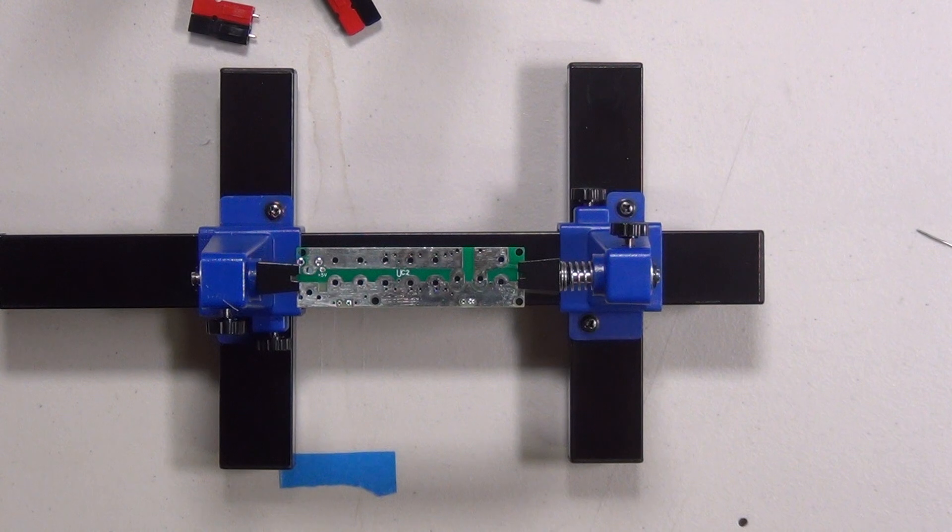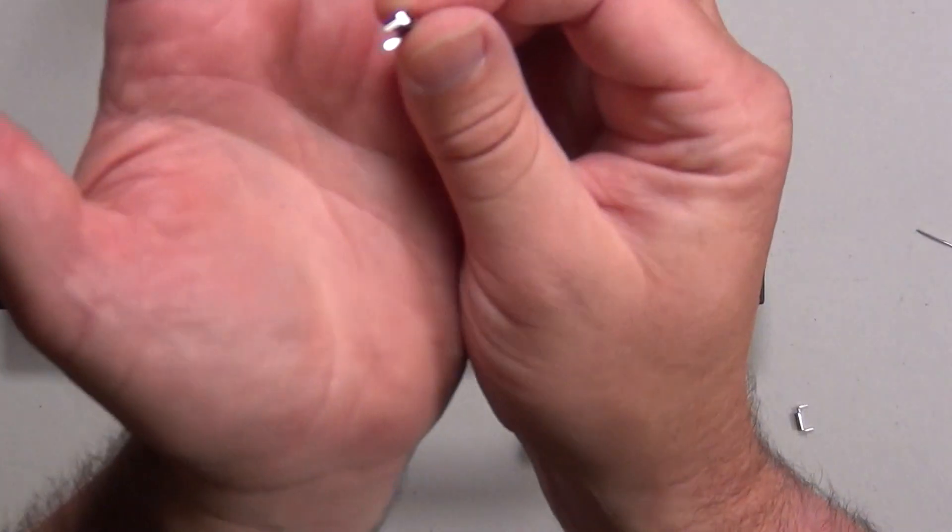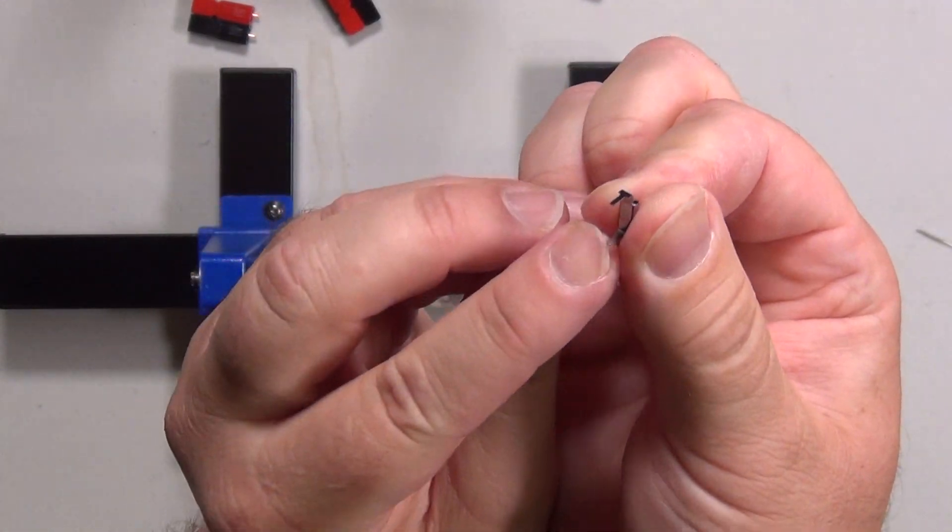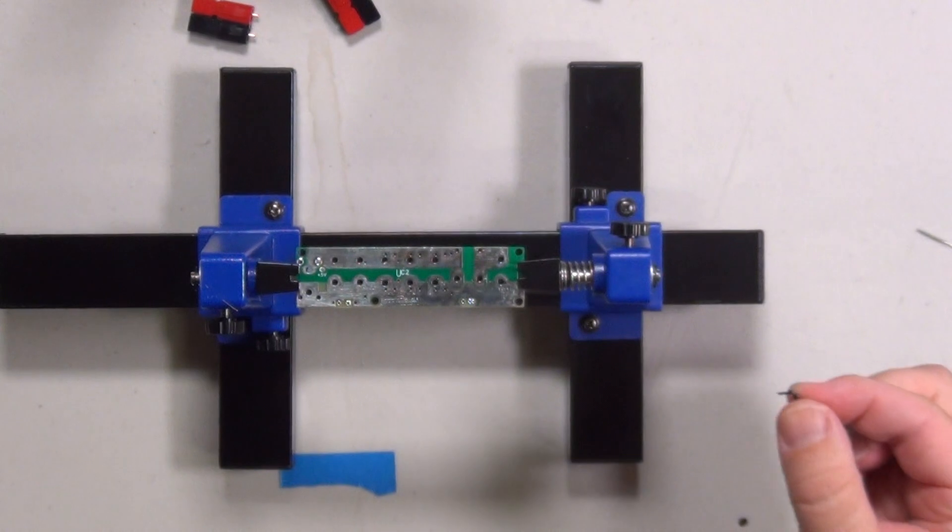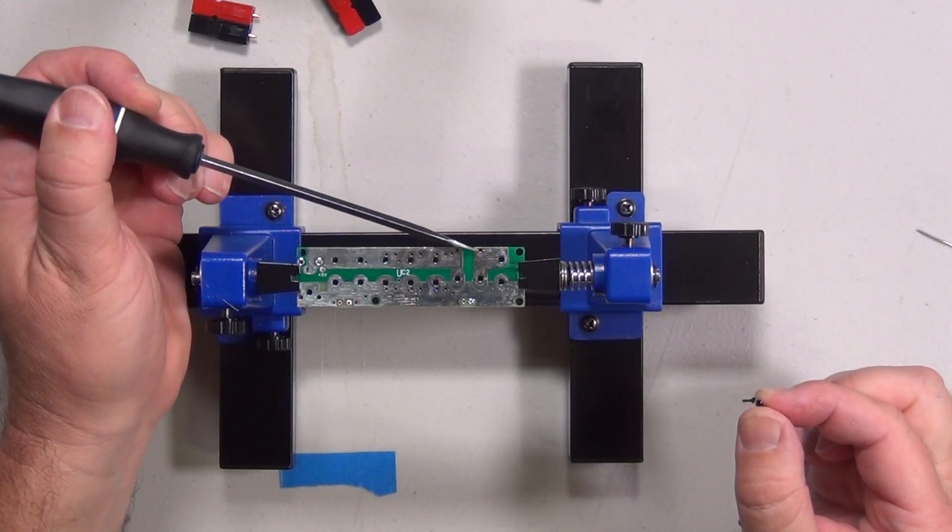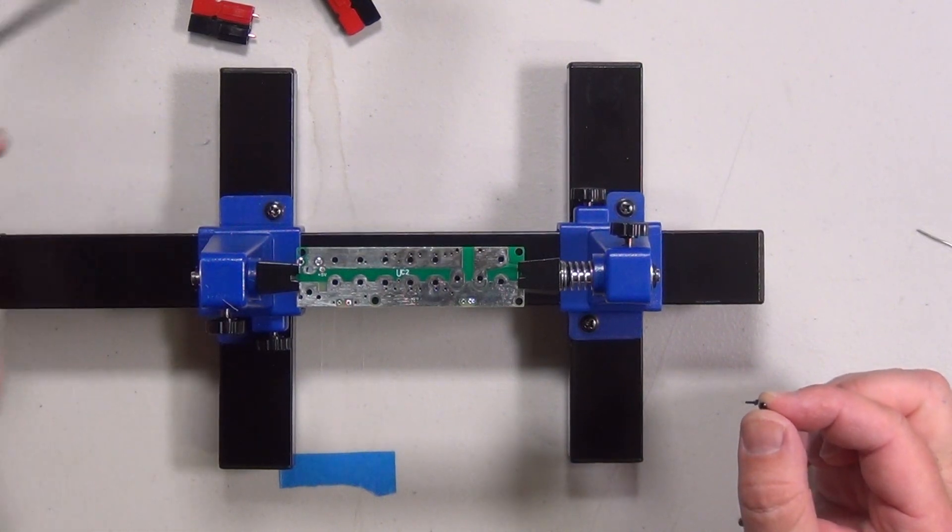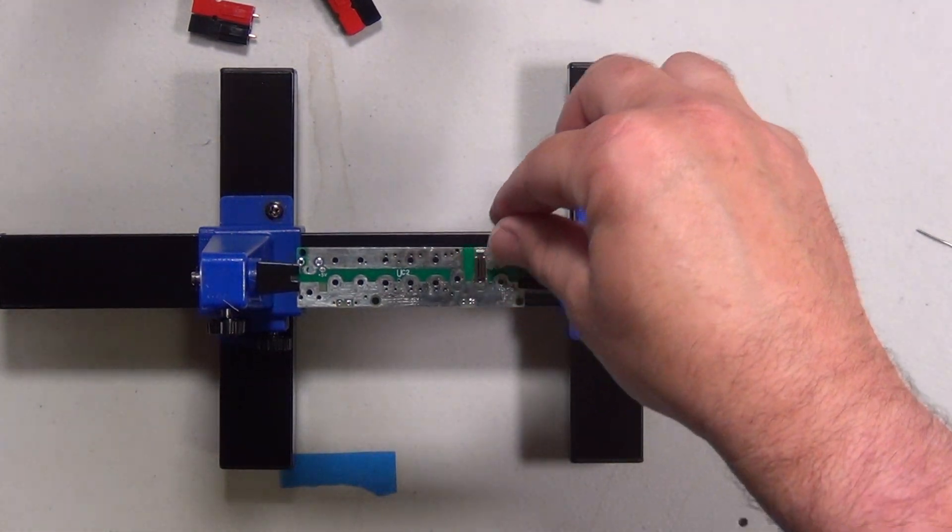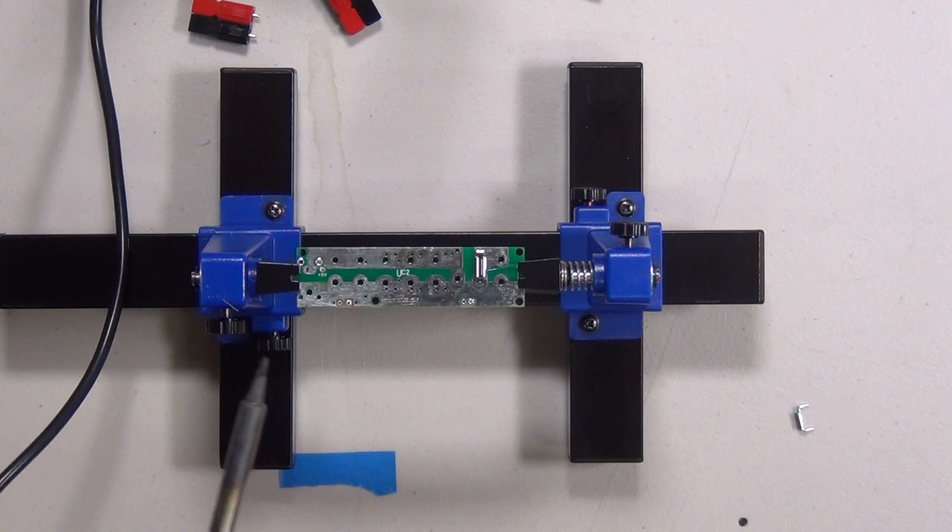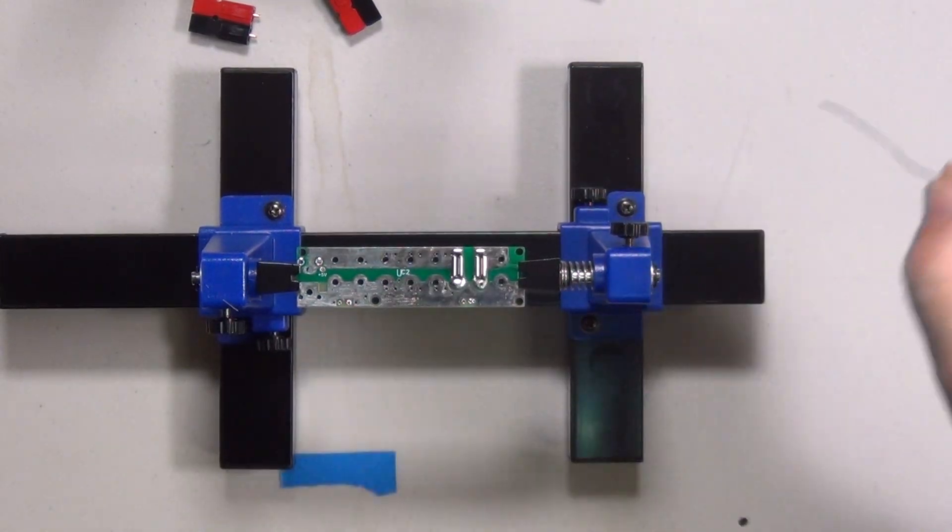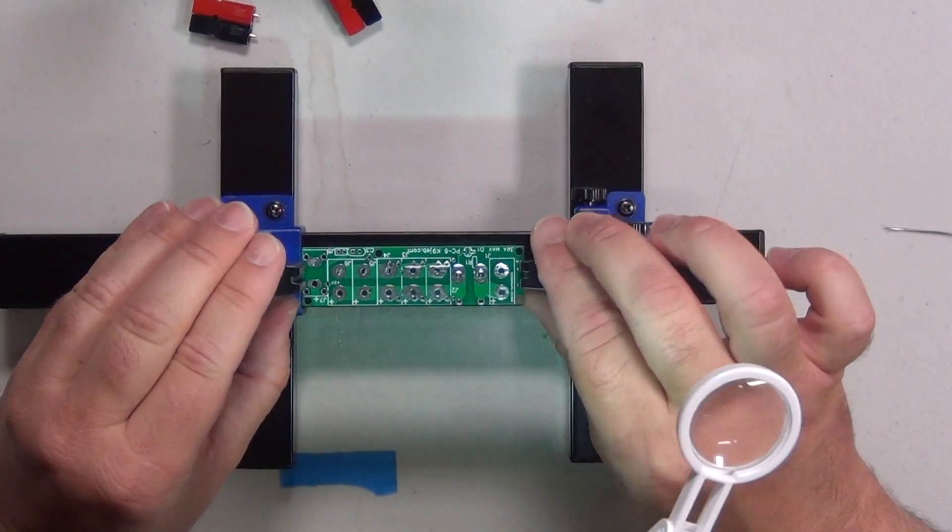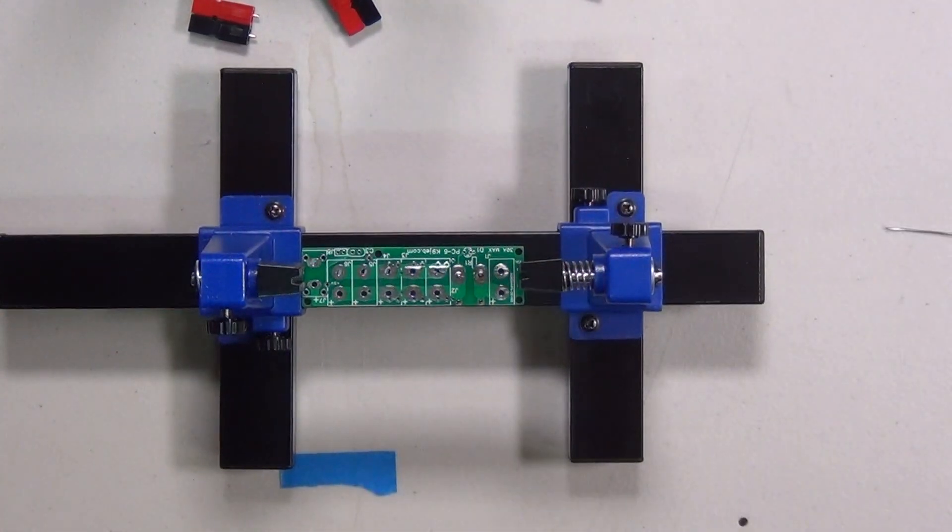The first components we're going to solder on here are going to be the fuse holders. Got two of them. They've got a skinny side here and a thicker side. So the skinnier portion is going to go into these holes and the thicker one into these holes. I'm going to try and do a little tacking here. Let's see if we can't flip that over and it'll hold. And we can solder them a little better from this side.